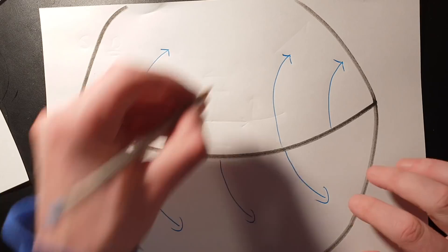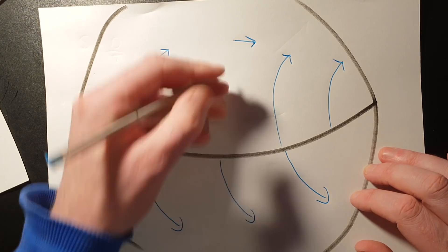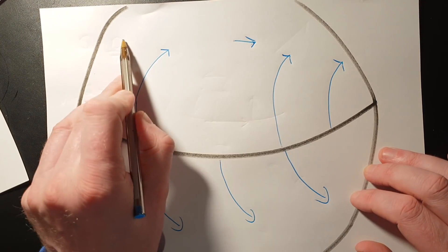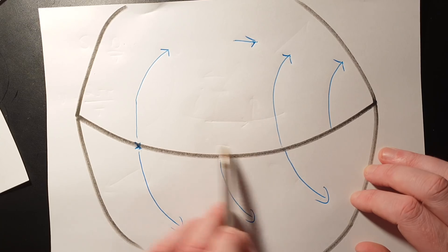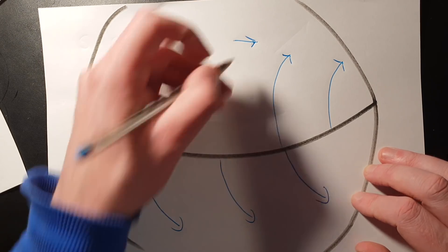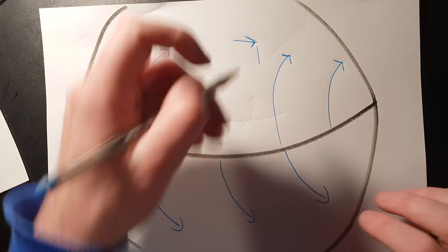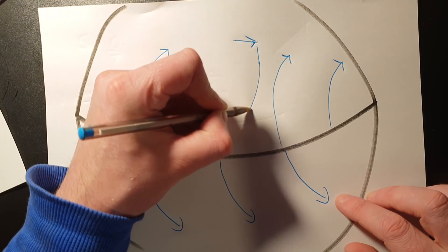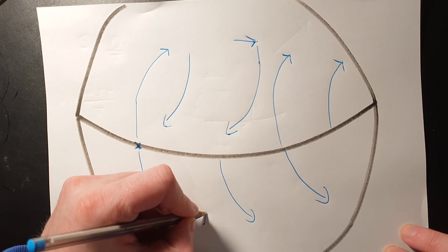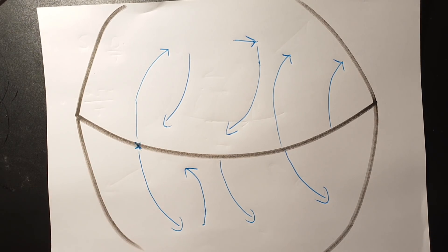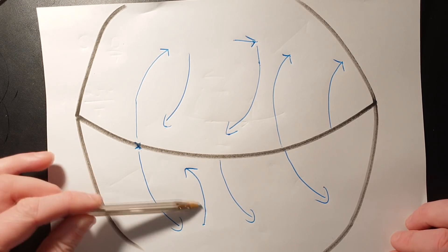Now let's look at something traveling in the opposite direction — something moving south from a northern point. When it's at that point, it has its own west-to-east velocity, which is going to be smaller than the velocity of any point on the Earth further south. So when it starts moving south, the land underneath it starts moving west to east faster than it is. It can't keep up, and it appears to fall behind. The same is true for something in the south moving north.